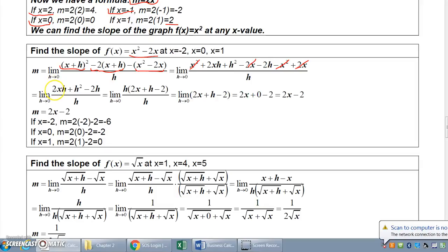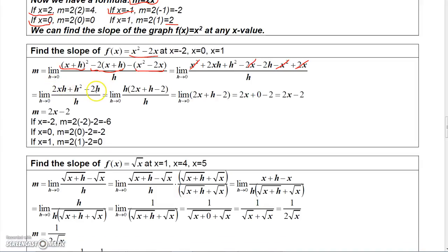If I factor the h out of these three terms — or you could just divide each term by h, either way gives the same thing — I can cancel h over h as 1, and I get 2x plus h minus 2. Now if I take this limit as h goes to 0, then the h term will disappear, and I'll just get 2x minus 2.